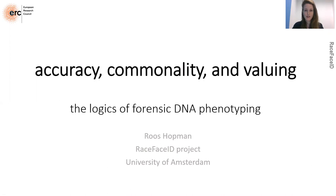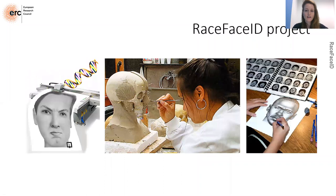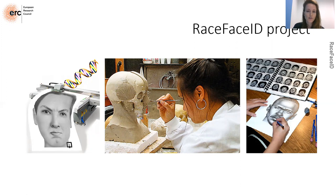Hi everyone, my name is Rose Hopman and I'm presenting today from Amsterdam. I want to share some insights from my research on forensic DNA phenotyping — on the different logics of forensic DNA phenotyping in particular. I'm a PhD candidate at the University of Amsterdam and part of the Race Face ID project, where we look at how race is enacted in forensic identification technologies — specifically three technologies each used to give face to an unknown suspect.